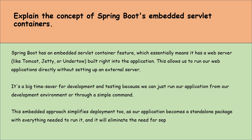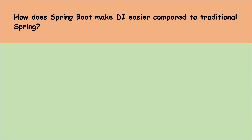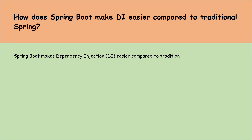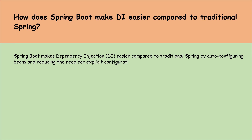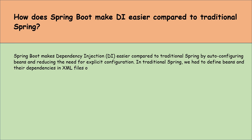Let's move to the next question: how does Spring Boot make dependency injection easier compared to traditional Spring? Spring Boot makes DI easier by auto-configuring beans and reducing the need for explicit configuration. In traditional Spring, we had to define beans and their dependencies in XML files or with annotations, which can be complex for large applications.